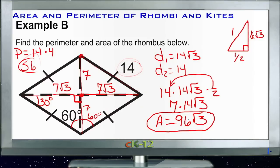Hey, you know what, actually that's 98 square roots of 3. 7 times 14 is 98, not 96. My bad, sorry about that.